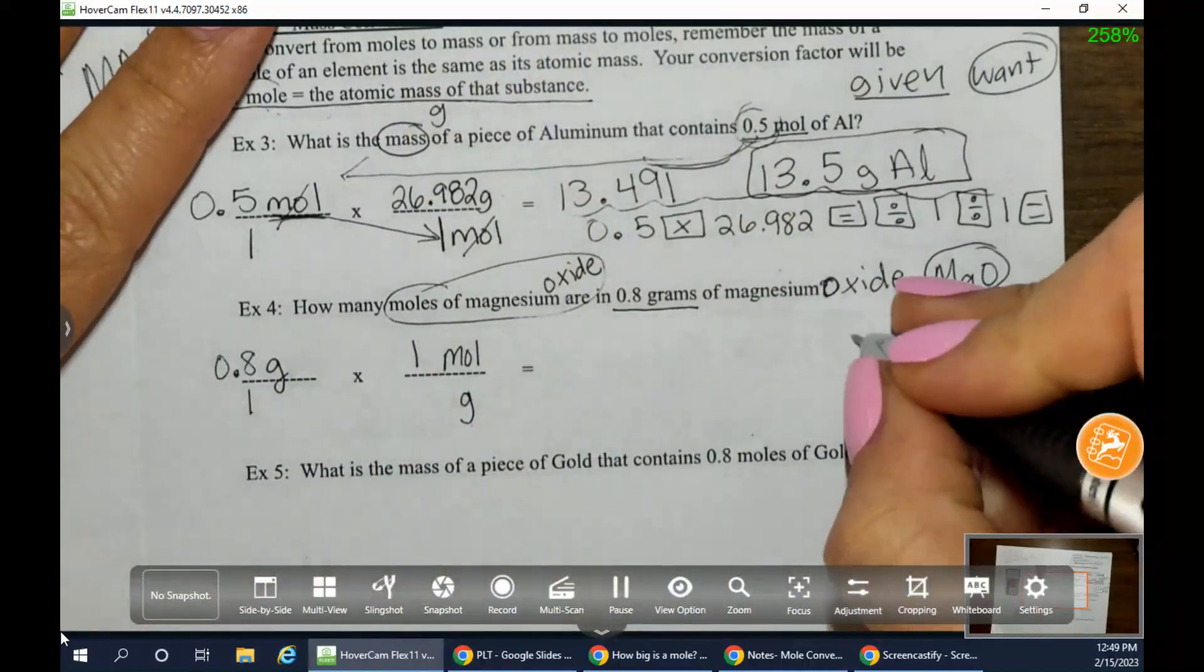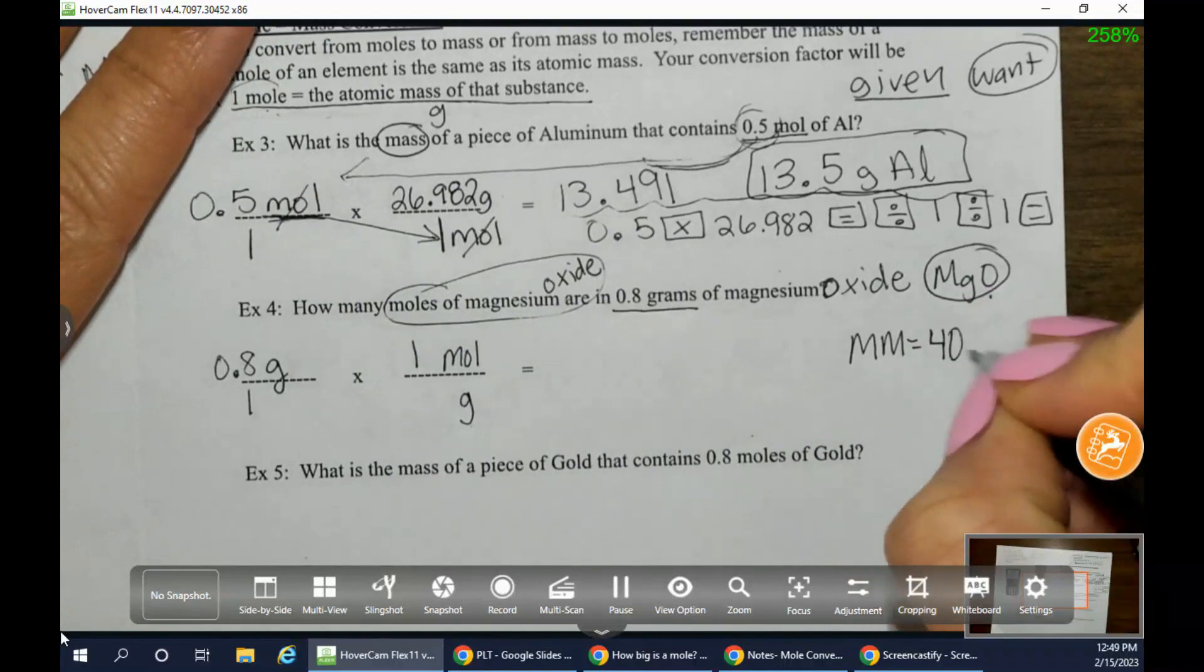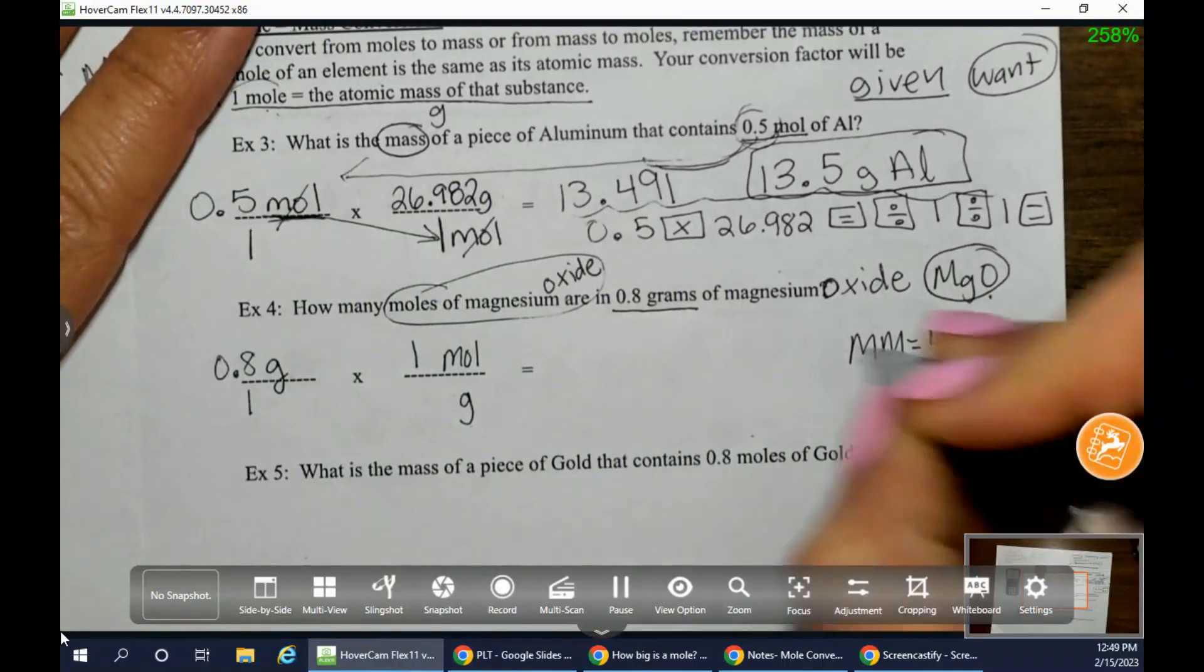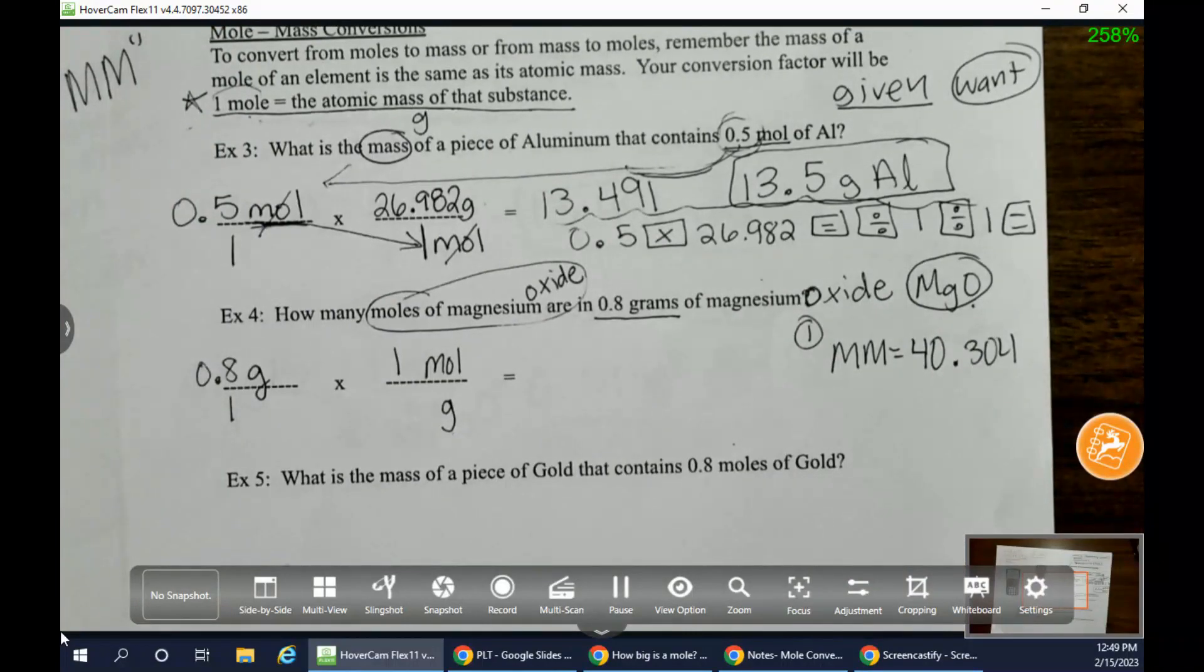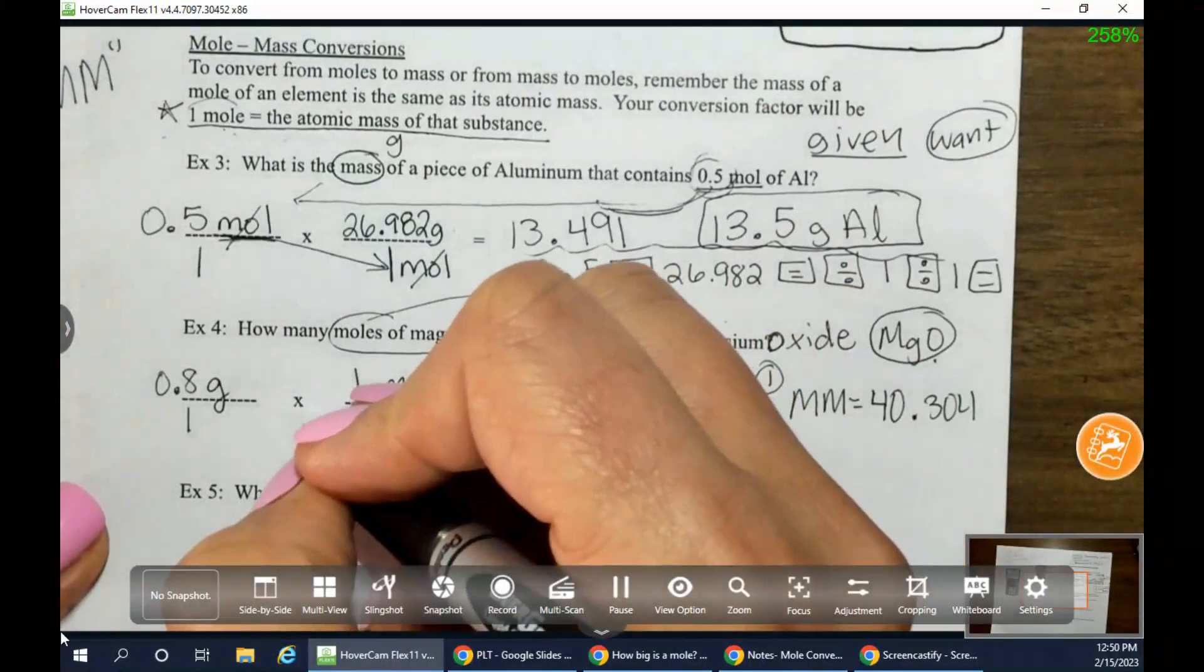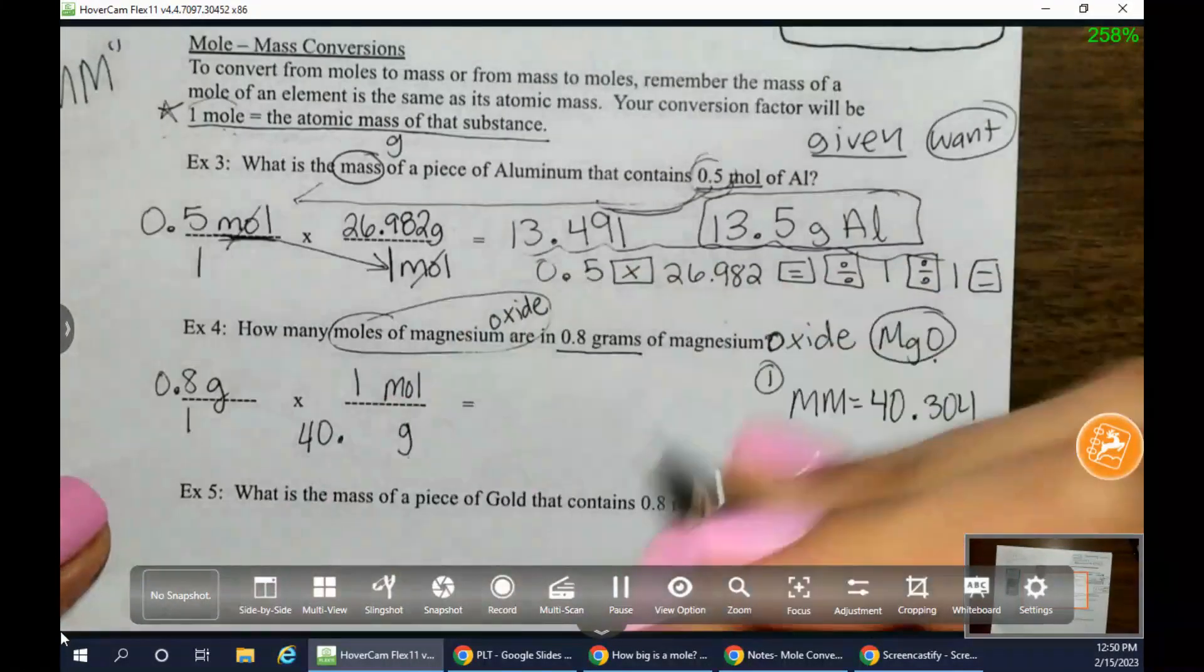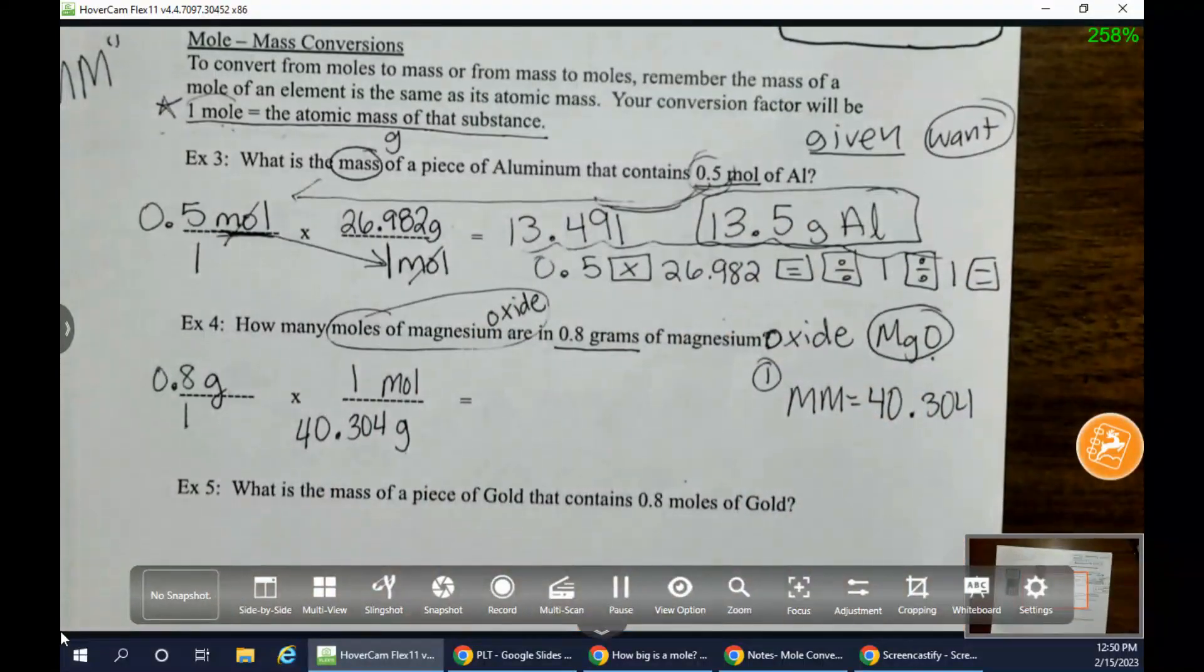So do you see the extra step that you're going to have to take if you have a compound? What do you have to do? You got to figure out your molar mass first, right? You've got to figure out your molar mass first. So this one we already had, which is nice. So 40.304. I'm going to go ahead and write this out to the side. That molar mass was equal to 40.304, meaning I first had to solve for that. You have to know what your molar mass is first. So now that we have that, now we can go ahead and put that number in because the definition of molar mass is one mole of something is its atomic masses.